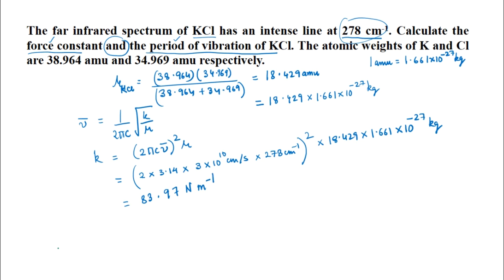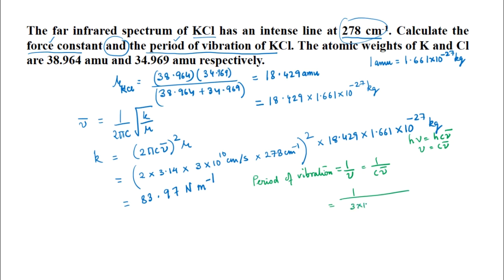We also need the period of vibration: T = 1/ν. Since ν = cν̃, we have T = 1/(cν̃) = 1/(3×10¹⁰ cm/s × 278 cm⁻¹). The final answer for the period of vibration is 1.20 × 10⁻¹³ seconds.